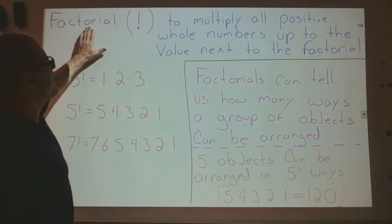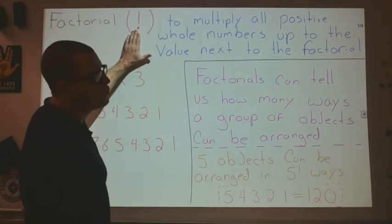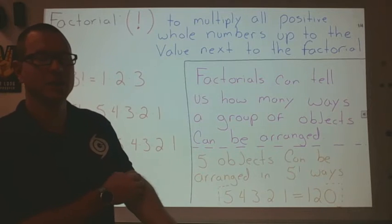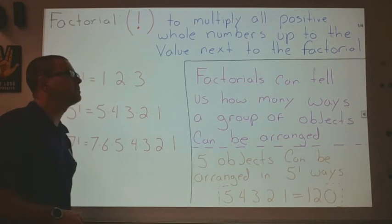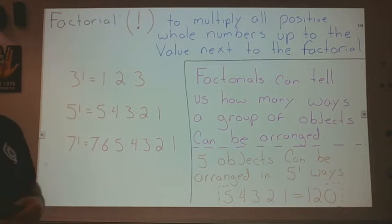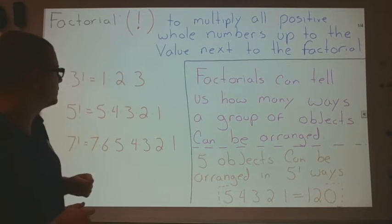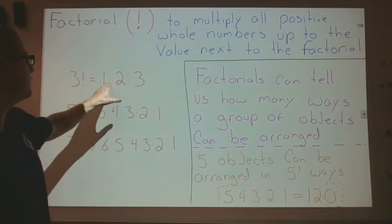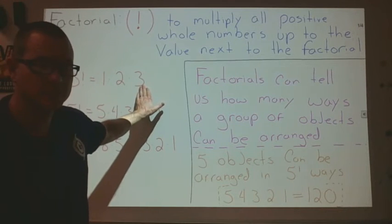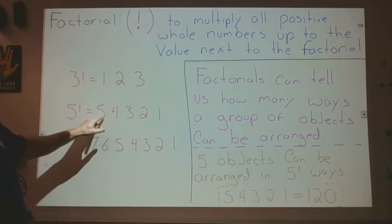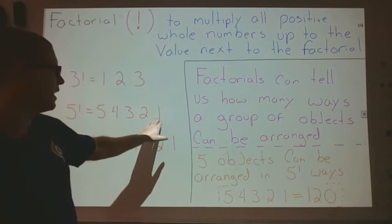For that, we need to define a new operator: the factorial, which just looks like an exclamation mark. It wants us to multiply all the positive whole number values up to the value with the factorial. So, for instance, 3 factorial is 1 times 2 times 3. 5 factorial is 5 times 4 times 3 times 2 times 1.